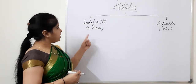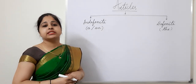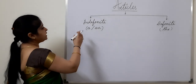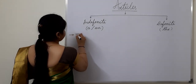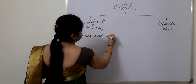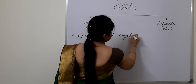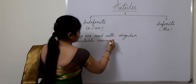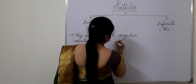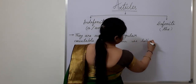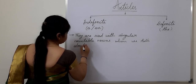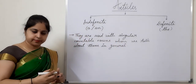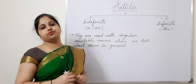Indefinite articles 'a' and 'an' are used with singular countable nouns — the thing which is singular and can be counted. They are used when we talk about them in general. So first, we will see where to use the article AN.